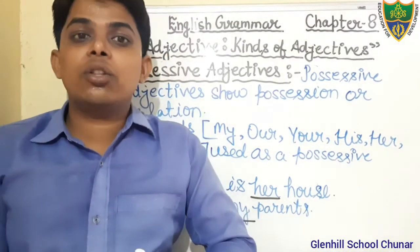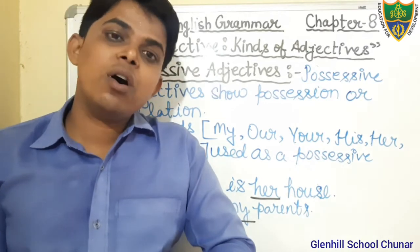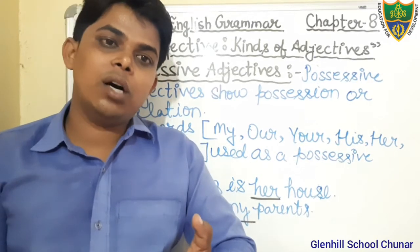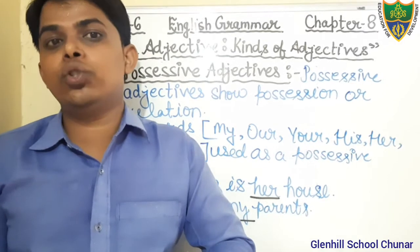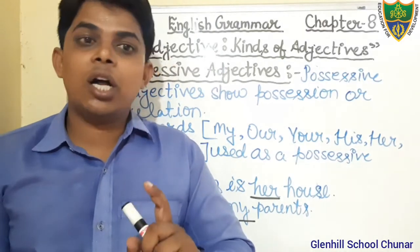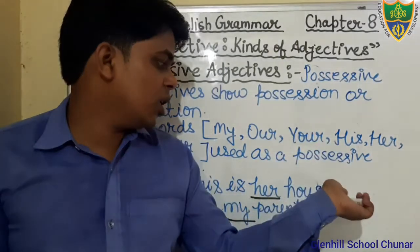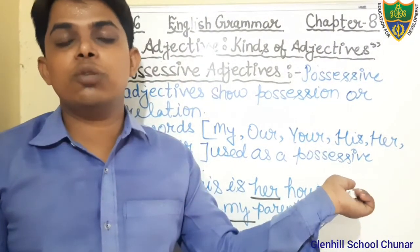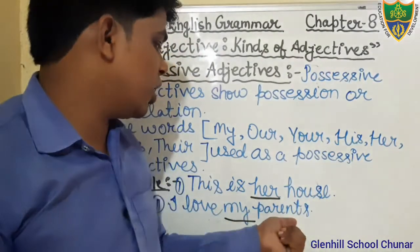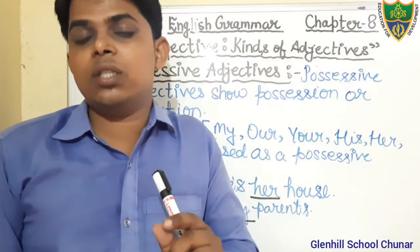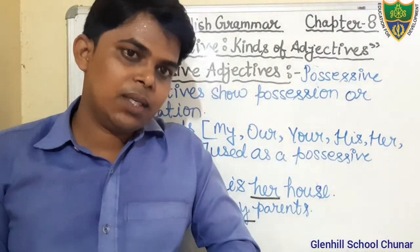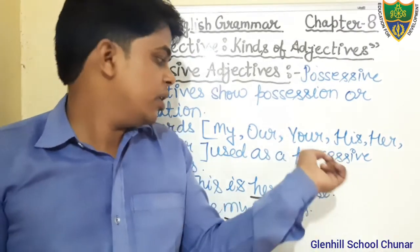Possessive Adjectives are those which show possession, ownership, or relation. The words my, his, her, their, its — these words are used as Possessive Adjectives, and they are followed by a noun. In 'her house,' house is the noun and 'her' is the Possessive Adjective. In 'my parents,' parents is the noun and 'my' is the Possessive Adjective because it shows relation and possession.